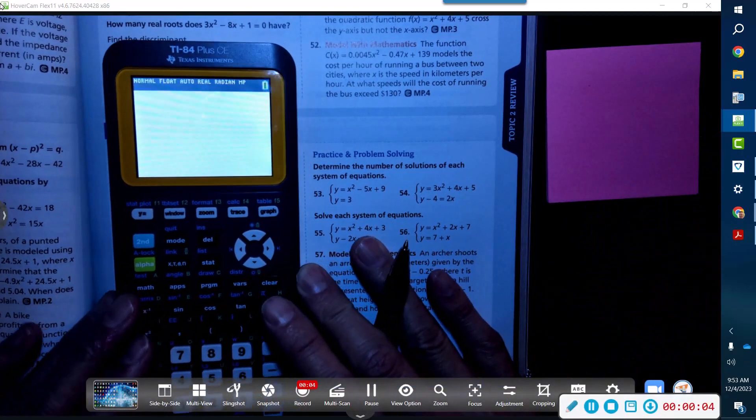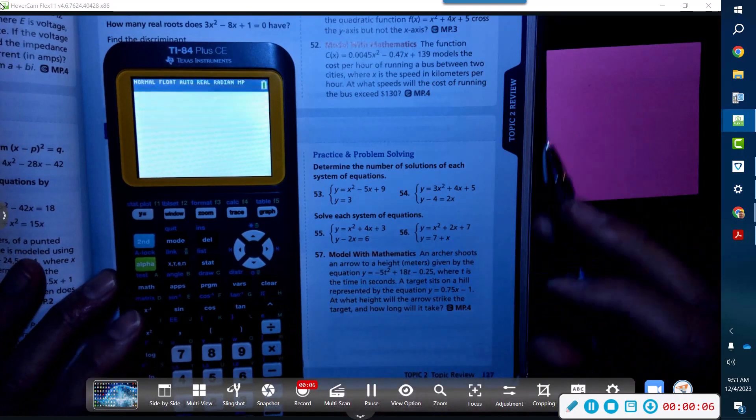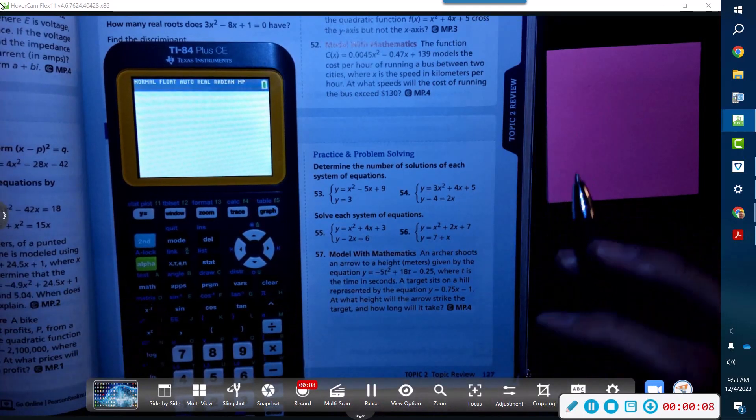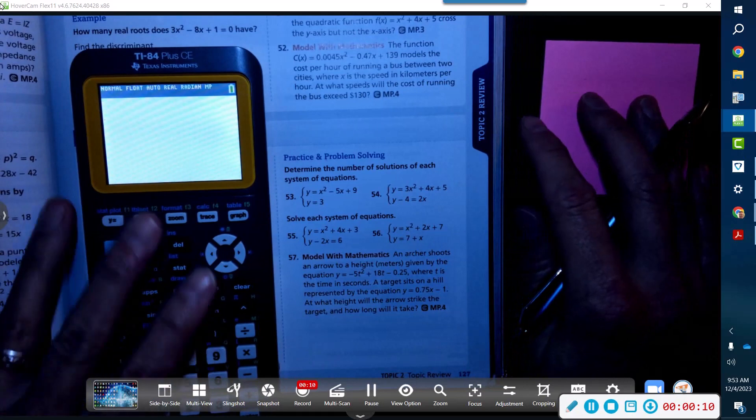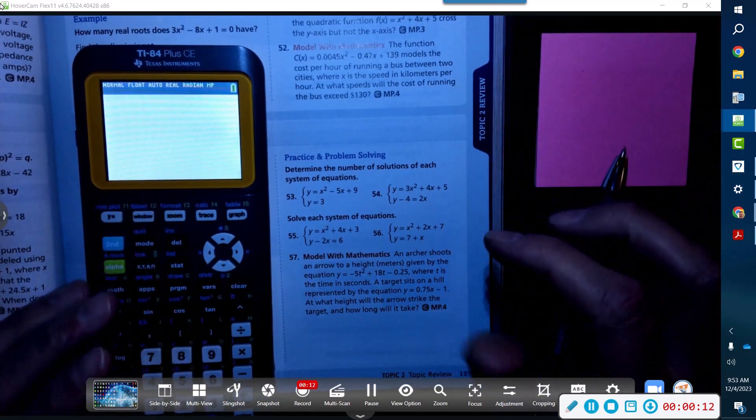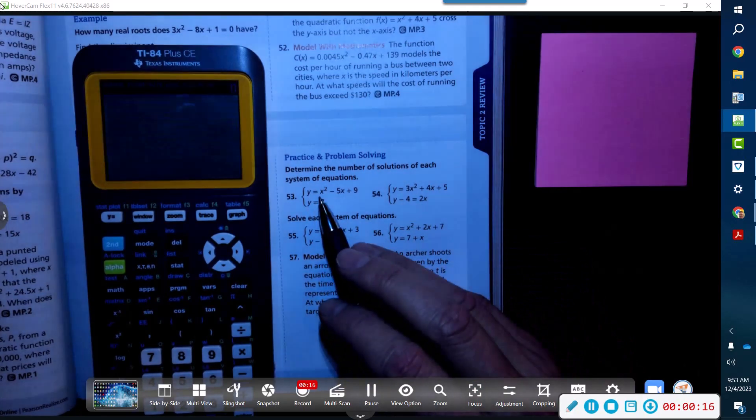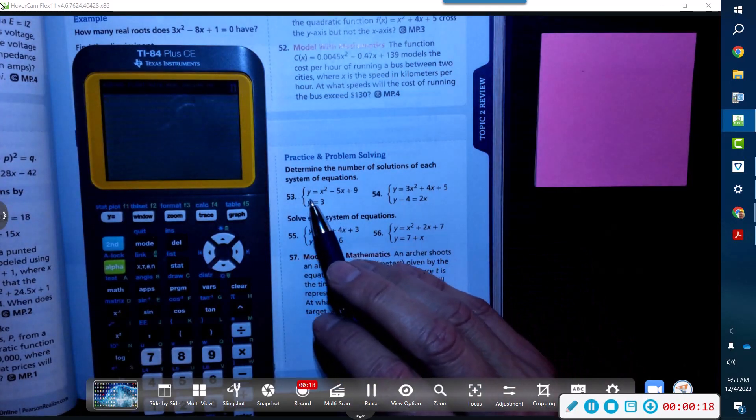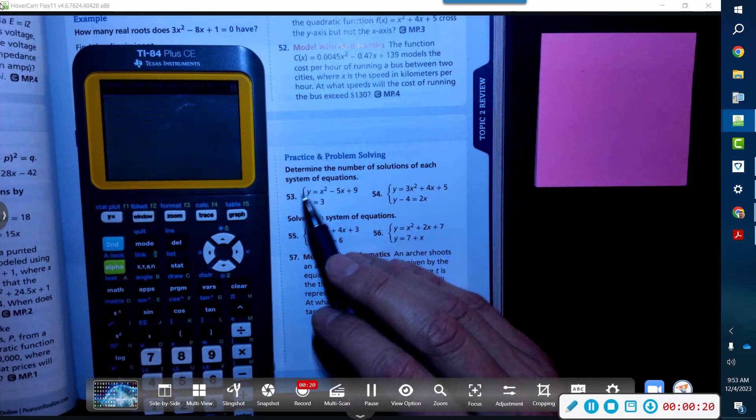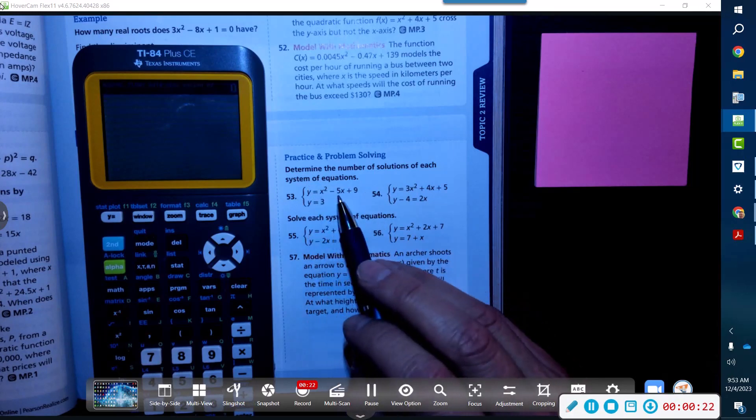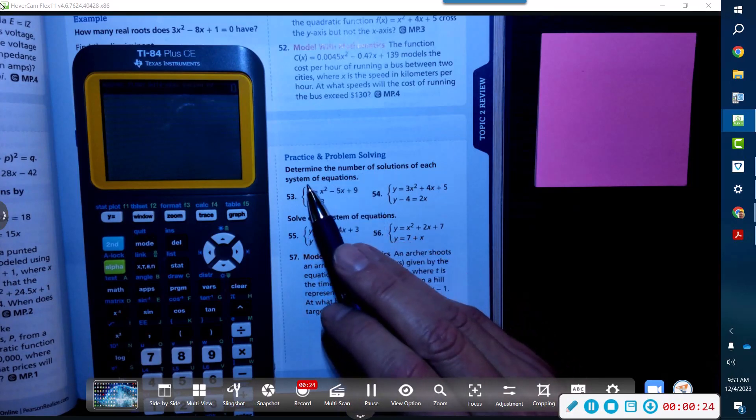It looks like the camera's broken on my laptop so there's no picture of me. That's not necessary but that's usually what I do. So anyways, you're going to have a disembodied voice here. We've got number 53, we're going to determine the number of solutions for each system of equations.